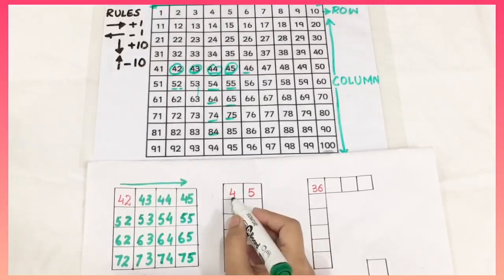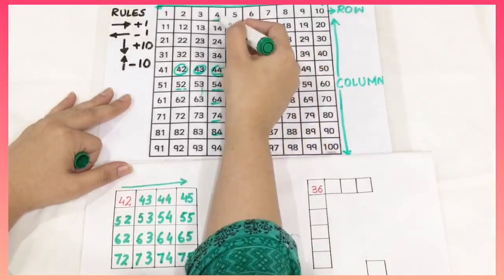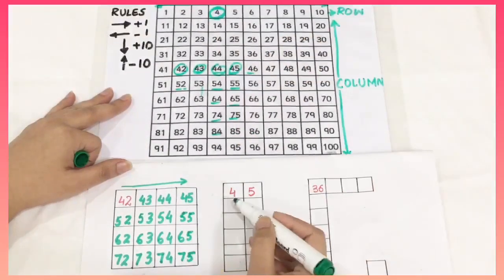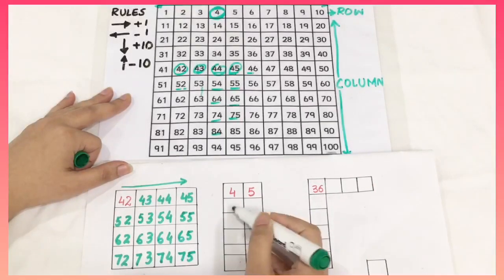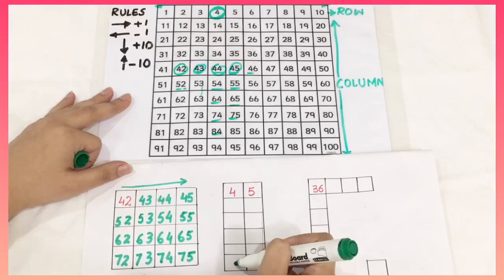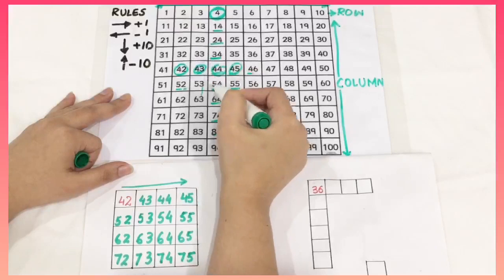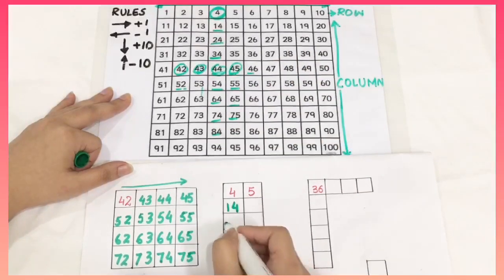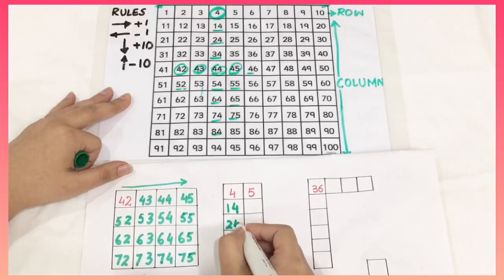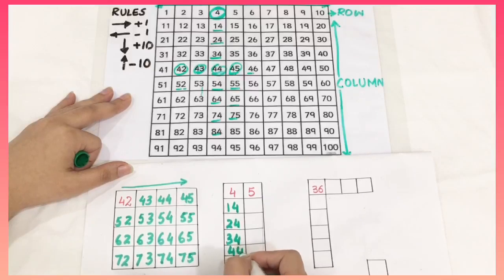Now let's have a look at this. This is 4. I am going to identify 4 in my 100 square chart. This is 4. Now I have to write all the numbers below it. I have 1, 2, 3, 4 and 5 blocks here. So 1, 2, 3, 4 and 5. That means 14, 24, 34, 44 and 54.